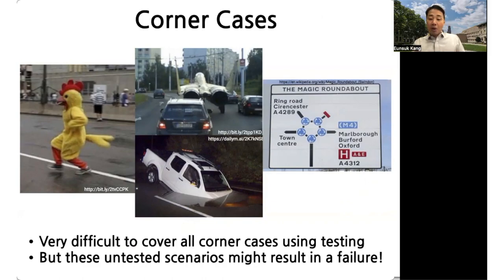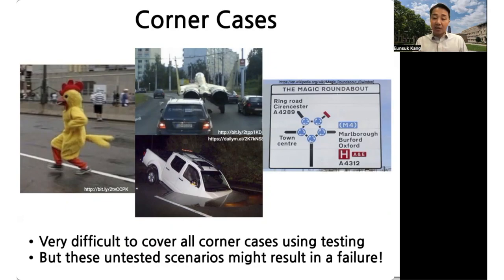For example, a self-driving car must be able to detect and avoid pedestrians and objects that may look very different from what you normally expect — such as a person dressed as a chicken, or a car that doesn't actually look like a car. If the system cannot handle these kinds of corner cases, it may result in an accident.